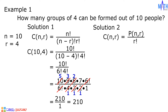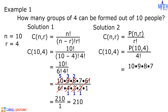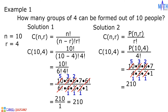Solution number 2: using this formula, the combination of 10 taken 4 at a time is equal to the permutation of 10 taken 4 at a time over 4 factorial. The permutation of 10 taken 4 at a time is equal to 10 times 9 times 8 times 7. 4 factorial is 4 times 3 times 2 times 1. After cancellation of common factors, multiply the remaining factors. In the numerator, 5 times 3 times 2 times 7 is equal to 210. In the denominator, 1 times 1 times 1 times 1 is 1. 210 divided by 1 is equal to 210.